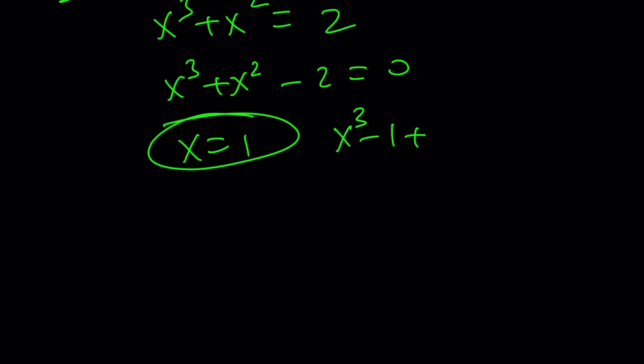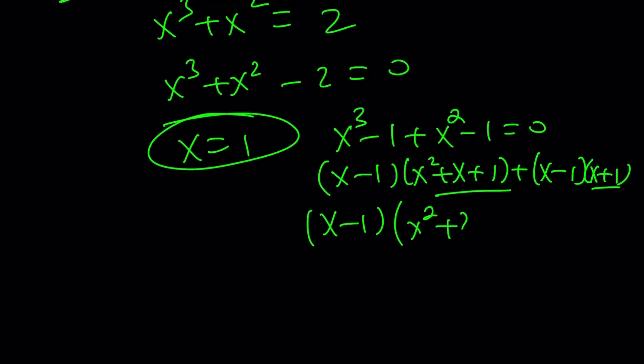So x equals 1 gives me the following: x cubed minus 1 plus x squared minus 1 equals 0. A lot of factoring practice here. Difference of 2 cubes, difference of 2 squares, so on and so forth. Take out x minus 1. You get this plus this, which is x squared plus 2x plus 2. And then this equal to 0 gives us x equals 1. Obviously, that's the real solution.